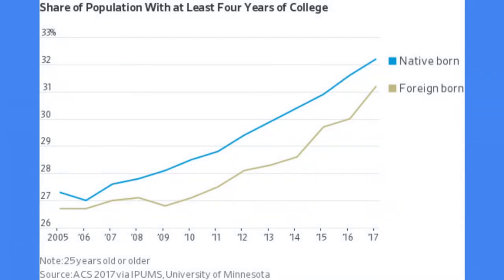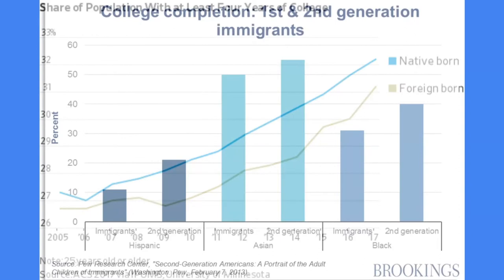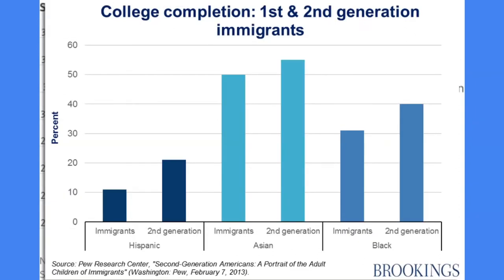For immigrants versus native-born Americans, college graduation rates are a little bit lower for immigrants but in comparable ranges — literally 32 versus 31 percent. Looking at this across racial groups makes the prior slide even more striking, because college completion is higher for second-generation immigrants across all racial groups, including for black second-generation immigrants. So the children of black immigrants, despite having higher college completion rates than their parents, are experiencing lower median incomes. Their income drop is in opposition to what should be happening with the level of investment they're making in human capital.